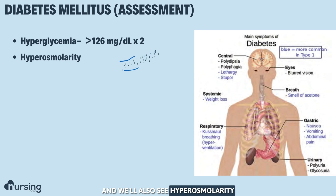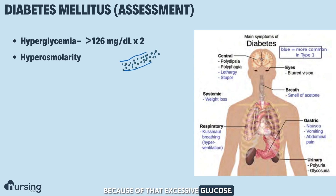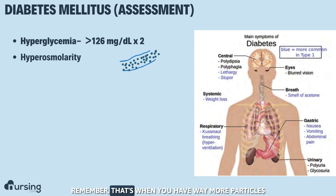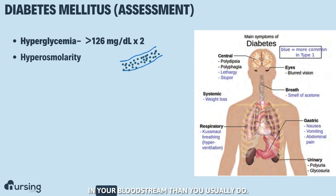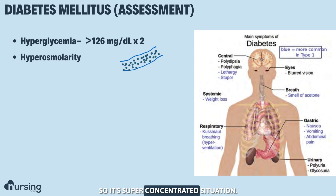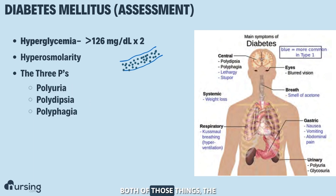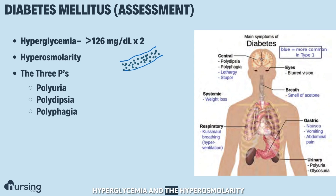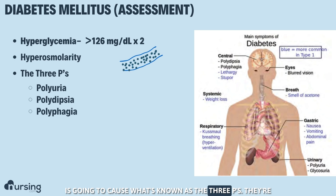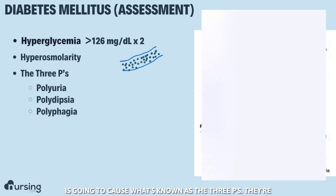We'll also see hyperosmolarity because of that excessive glucose. That's when you have way more particles in your bloodstream than you usually do — it's a super concentrated situation. Both the hyperglycemia and the hyperosmolarity are going to cause what's known as the three P's.